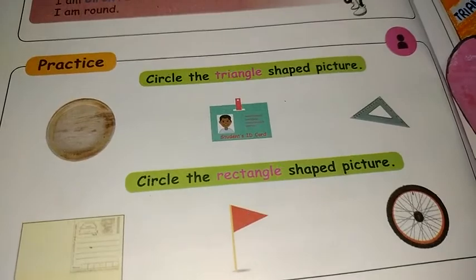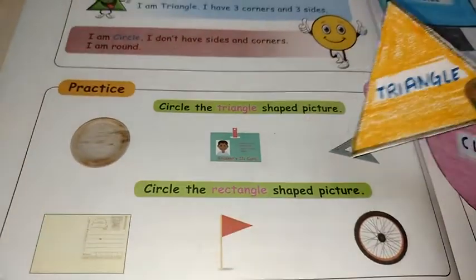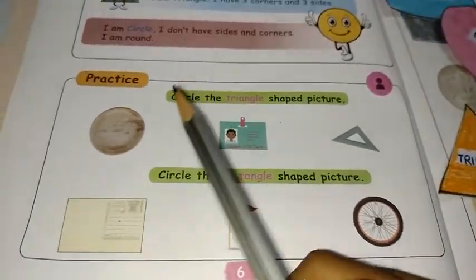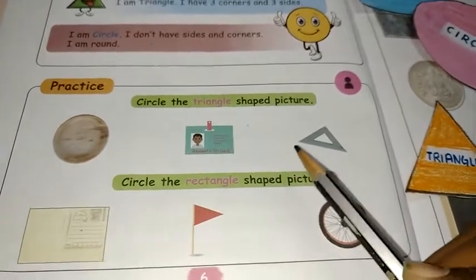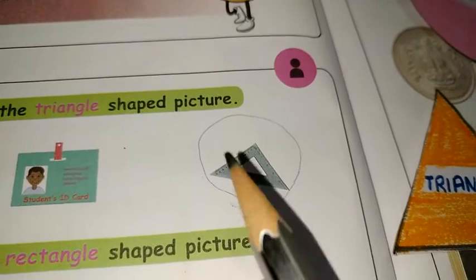Next, practice. Circle the triangle shaped picture. Yes, this is triangle. Which picture looks like triangle? This, no, it's a round. This, no. This, yes. It looks like triangle.